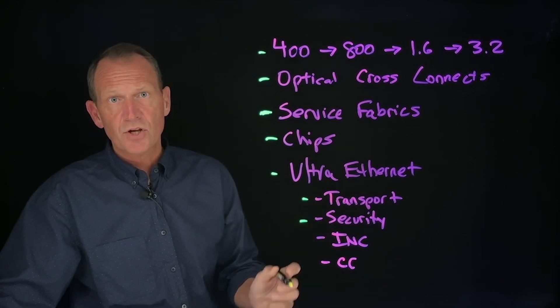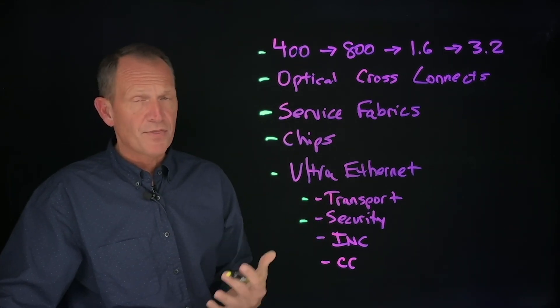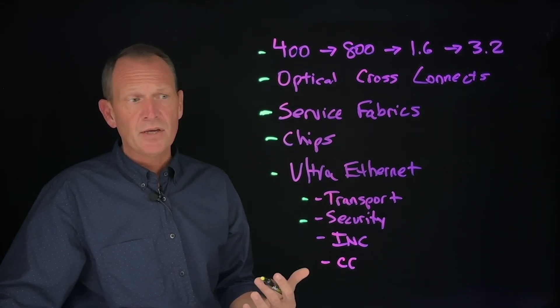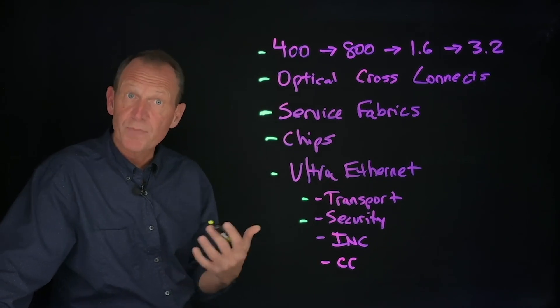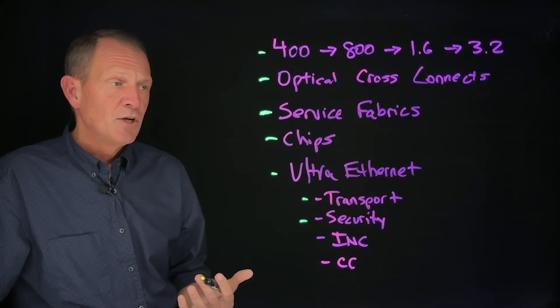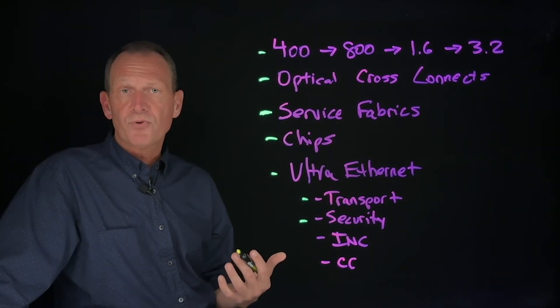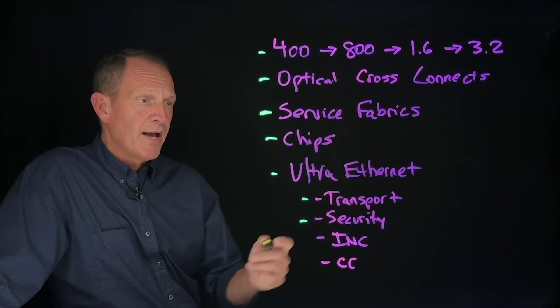Security is a first class citizen. There's pieces around authentication, authorization and privacy, which allow transport, especially across geographic domains, to be secure and private from prying eyes.